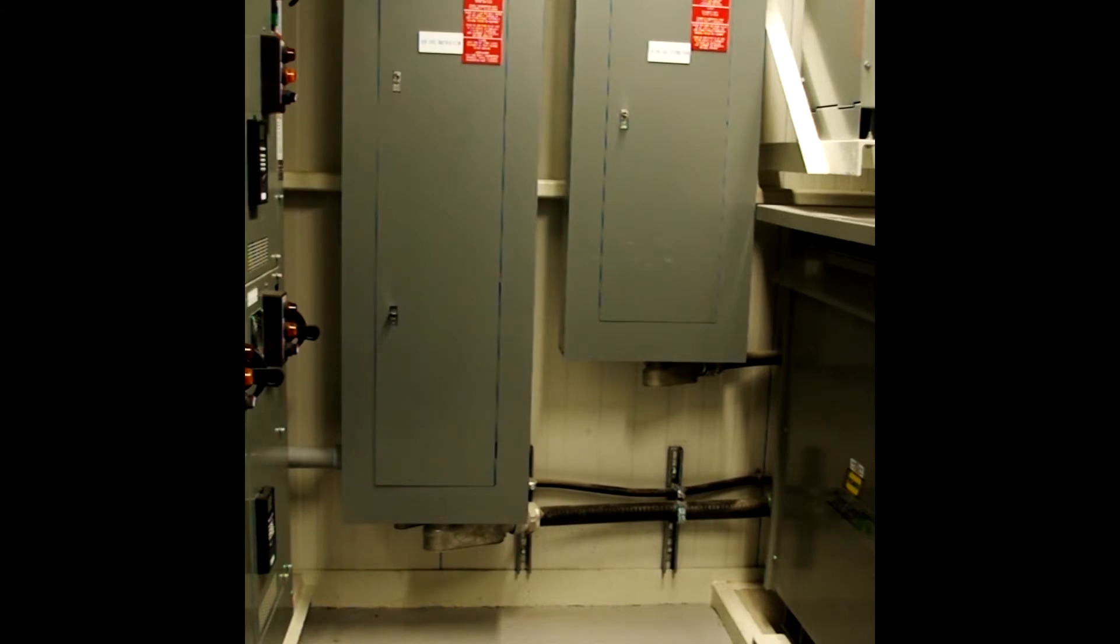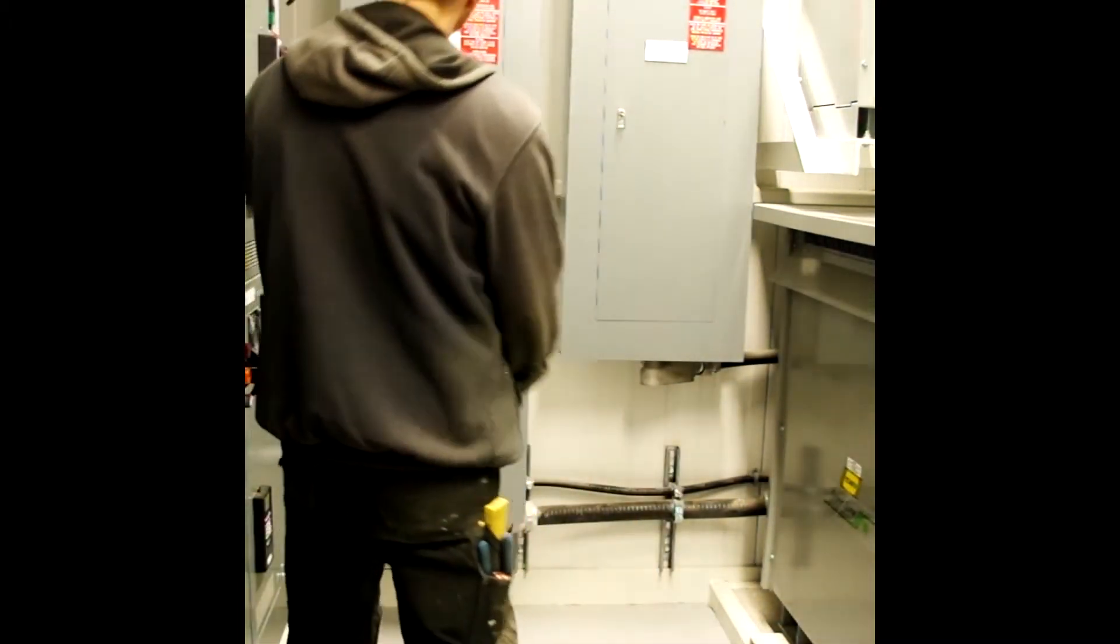So on the left hand side, you've got the 600 volt distribution panel plus breakers. Then on the right hand side, you've got the 120 slash 208 volt distribution panel plus breakers.